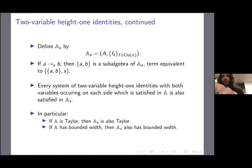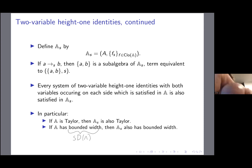In particular, two special cases of varieties defined by systems of two-variable height-1 identities with both variables on each side: if A is Taylor, then A_S is Taylor; and if A has bounded width, then A_S has bounded width. For pure algebraists, bounded width is equivalent to being congruence meet semi-distributive. The same thing does not work for congruence modularity, just because semilattices are not congruence modular.